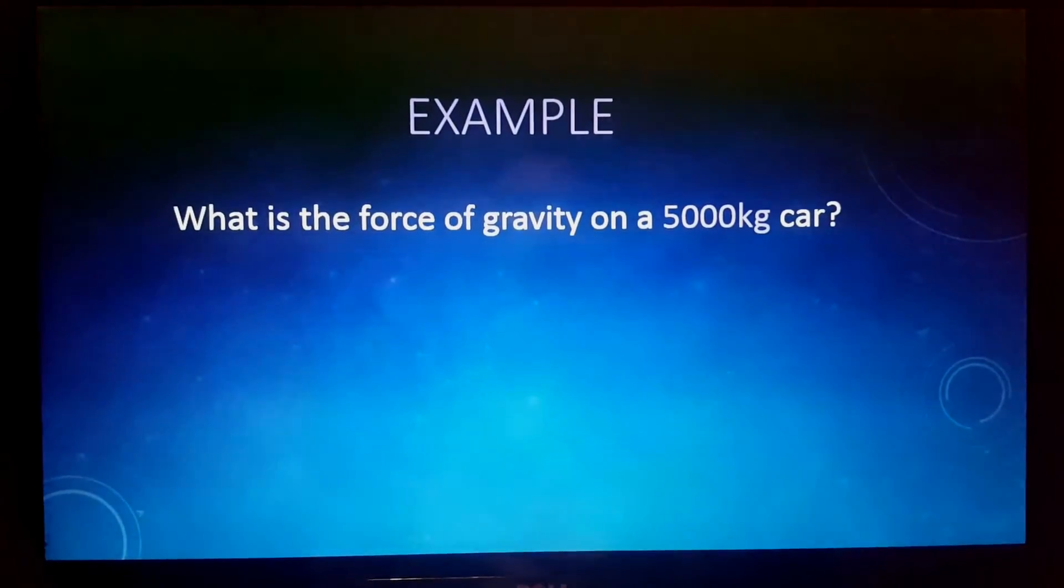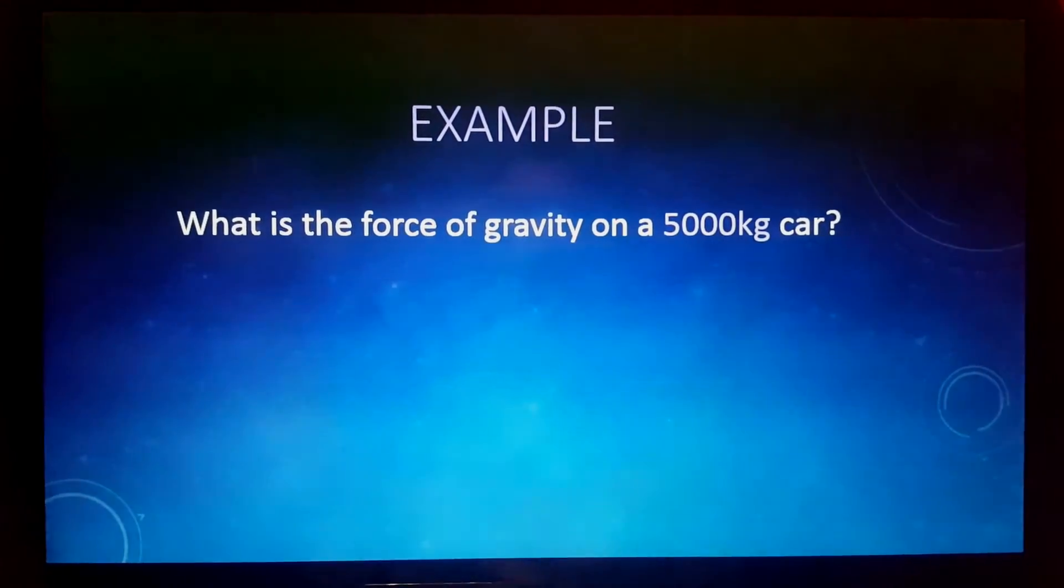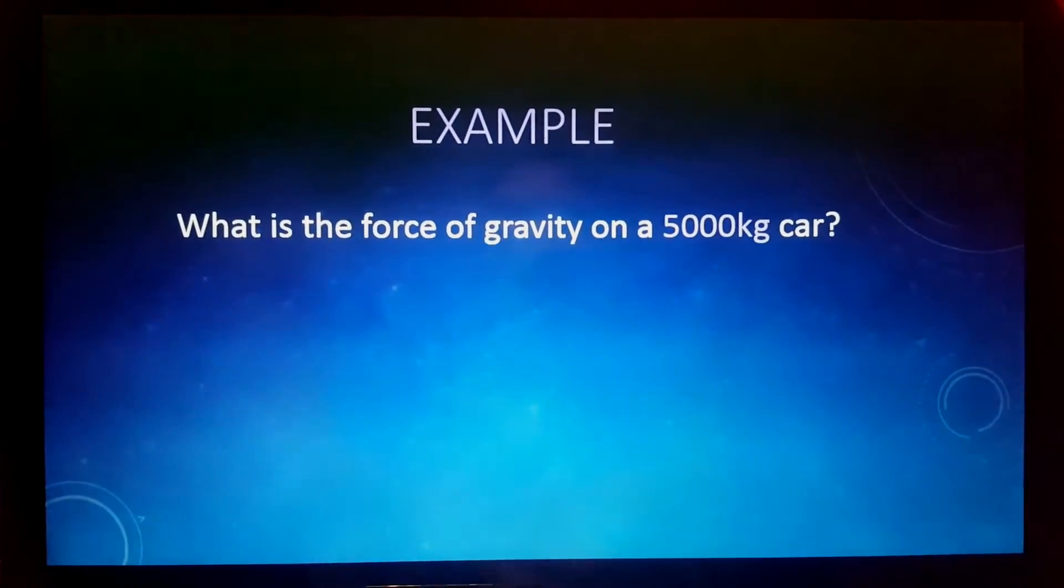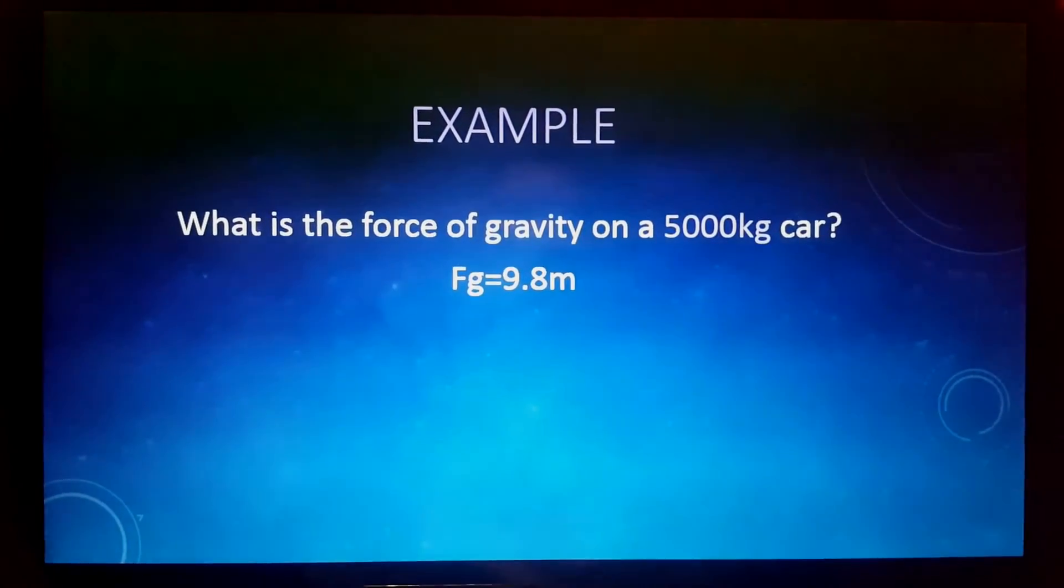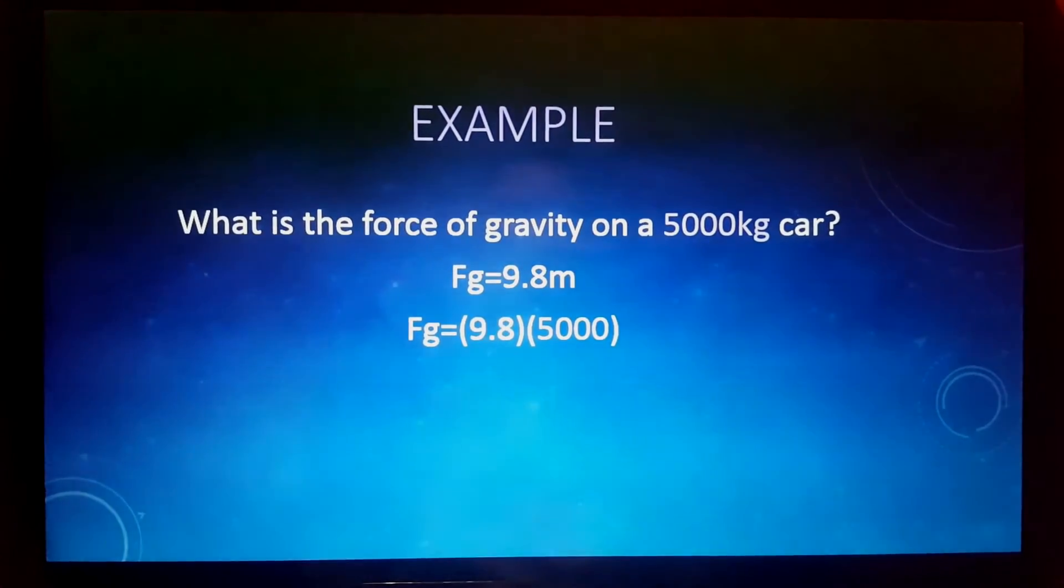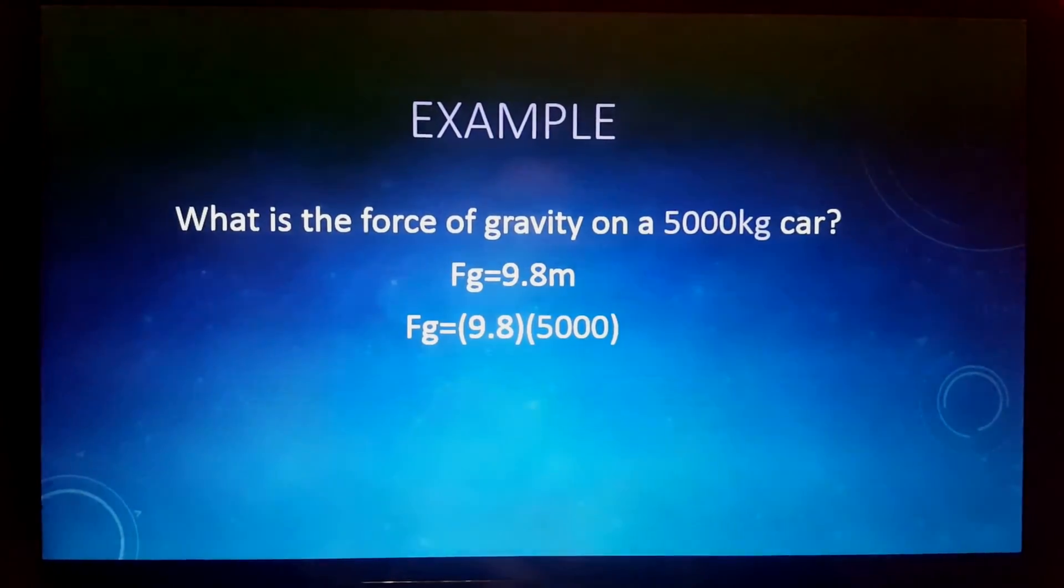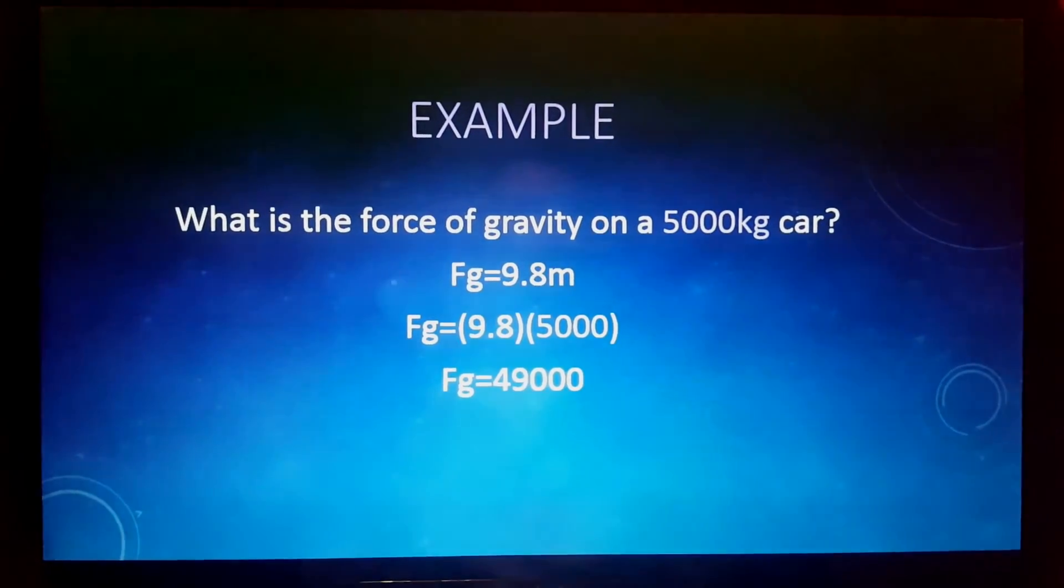For example, what is the force of gravity on a 5,000 kilogram car? First, you would use the equation f of g equals 9.8m. f of g equals 9.8, which is the constant, times the 5,000 kilograms. And then you would multiply them together to get the force of the gravity, which is 49,000.